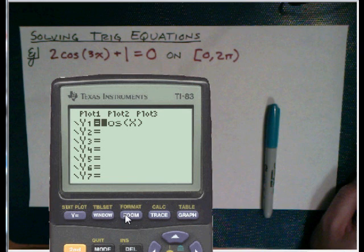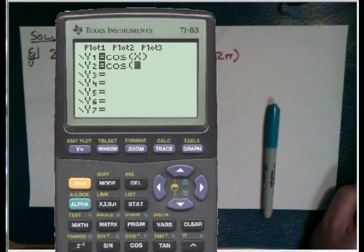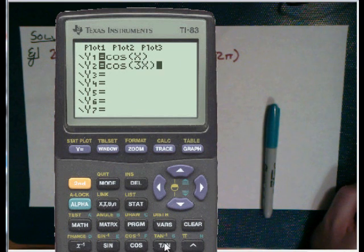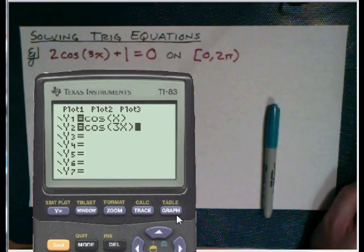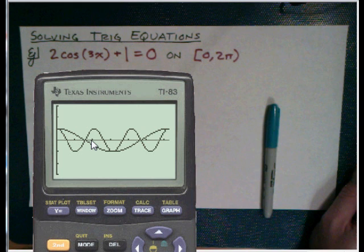But if we change the period to 3, what's going to happen is it's going to repeat more often. The period's shorter, meaning that it repeats in 2 pi over 3. So right there is one repetition. Right there is a second. And right there is a third repetition.